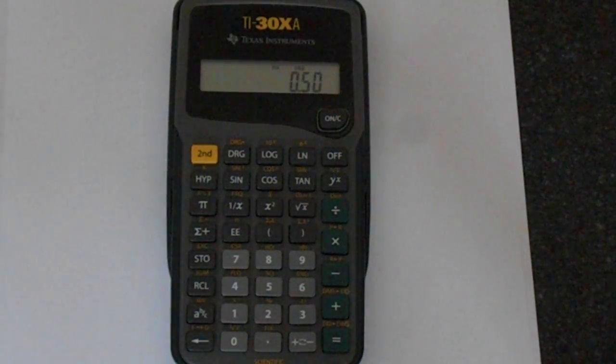That's how you change the number of decimal places that your calculator shows on your TI-30XA. Thank you for watching. Hopefully, this has been very helpful to you.